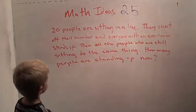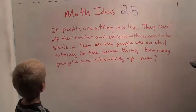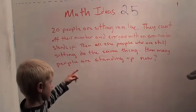20 people are sitting in a line. They count off their number, and everyone with an even number stands up. Do you know what an even number is? Yeah, it's like 2, 4, 6, 8, 10. That's exactly right.